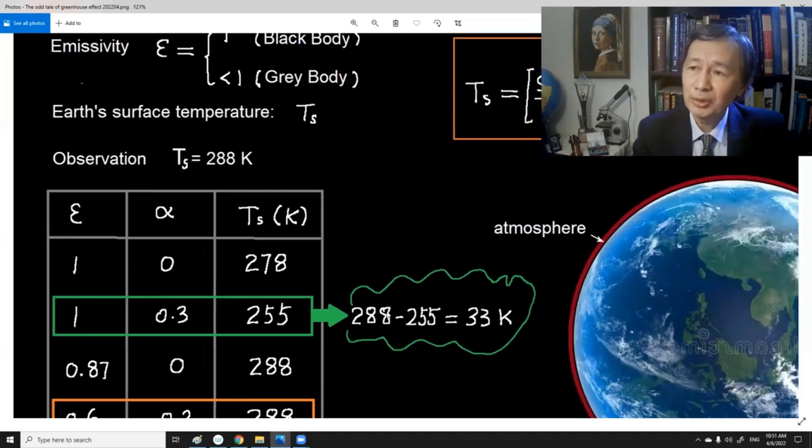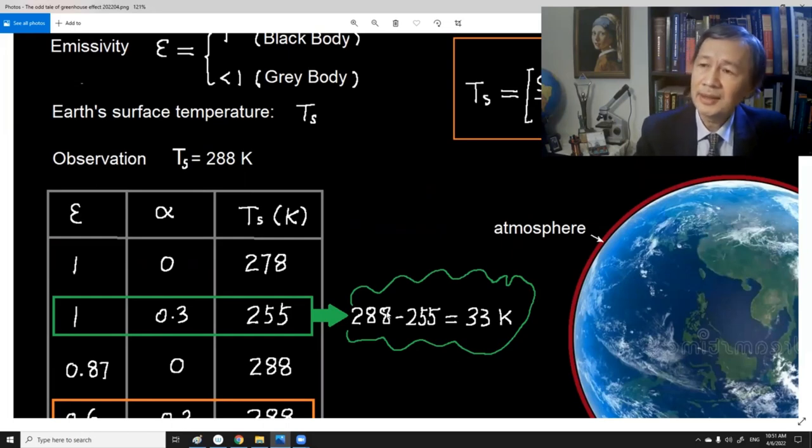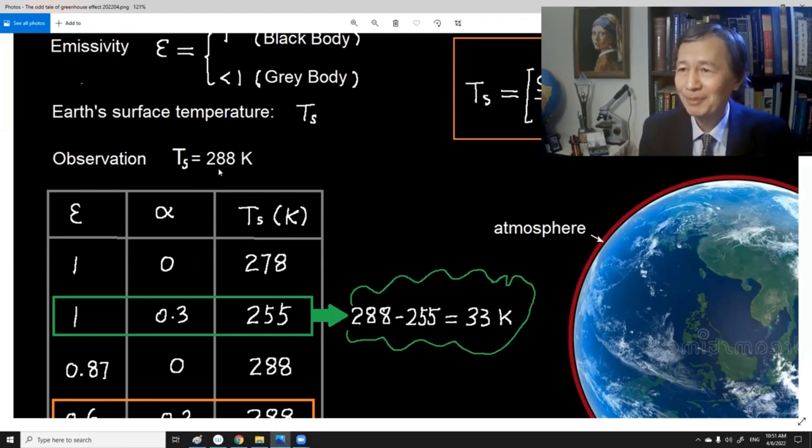In other words, nearly 30 percent of arriving solar radiation will be reflected by the Earth's atmosphere system. Now, if we just use this number, we can build this table. If we assume that the Earth can be treated as a black body, then we can assume that the emissivity is a unit. If we substitute the observed albedo 0.3, we can calculate the mean surface temperature 255, which is significantly lower than the measured temperature.